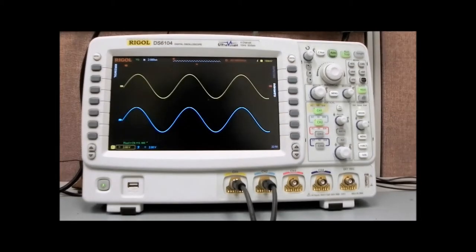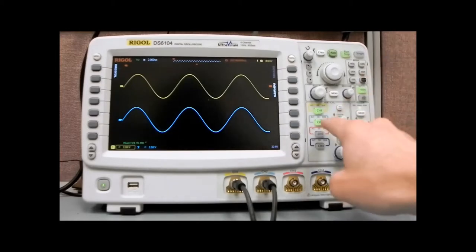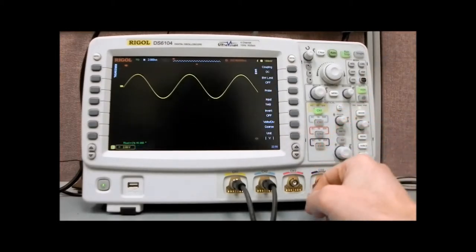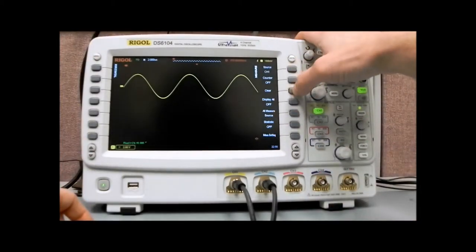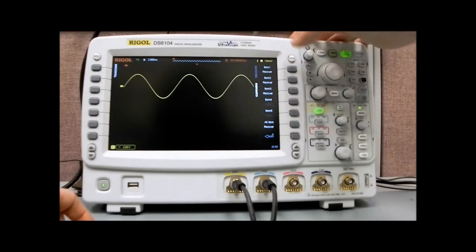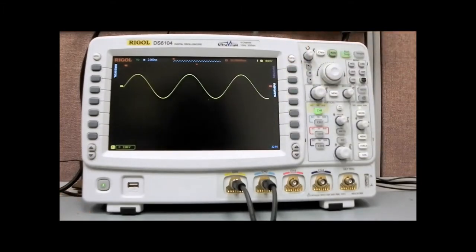And now I'd like to take a closer look at one more feature actually, the display persistence on the DS6000 before we wrap this up. But I'm going to disable channel 2, and I'm going to get rid of this measurement in order to make the display a little bit more clear, and we'll just hit all items. And now what I'd like to do is, I have a 100 kilohertz sine wave, I'm going to modulate that.